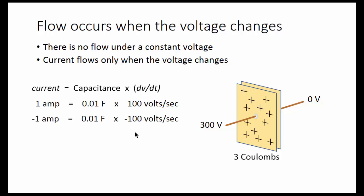If we decrease the voltage at 100 volts per second, we'll get a negative flow of 1 coulomb per second or minus 1 amp.